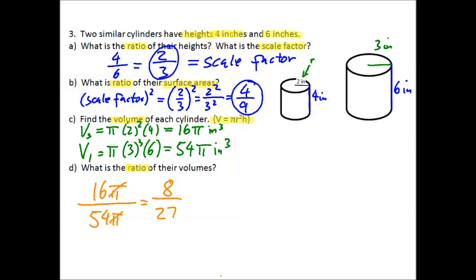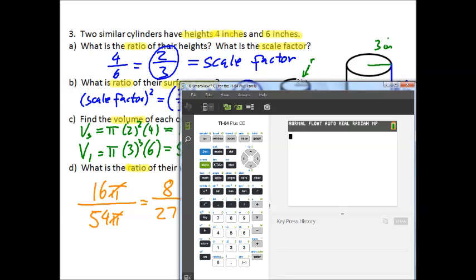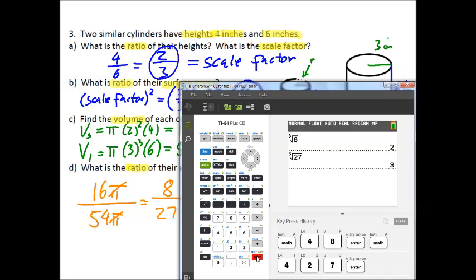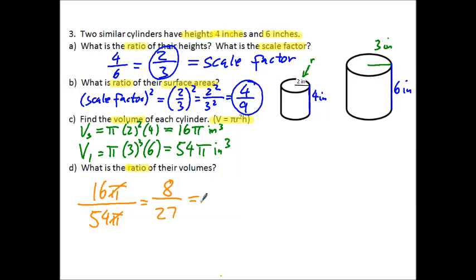We can recognize 8 and 27 as perfect cubes. Using the calculator, press Math then go to number 4 to open the cube root. The cube root of 8 is 2, and the cube root of 27 is 3. So we're talking about 2 cubed over 3 cubed, or 2/3 cubed — which is our scale factor cubed.